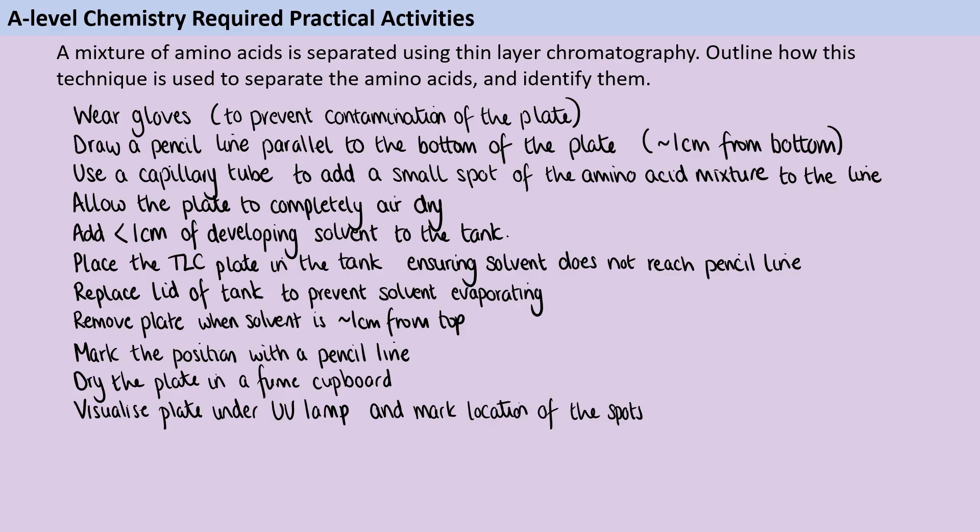Then we've got the location of the spots and the location of the solvent front so you use those two values to calculate RF values. Here we're going to have a spot for each pure substance so each amino acid is hopefully going to get its own spot. Assuming that we have a list of amino acids that we were expecting to be in here, we can use a data book to look up those RF values and therefore identify the different amino acids.